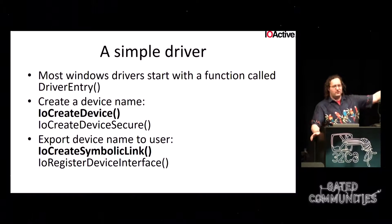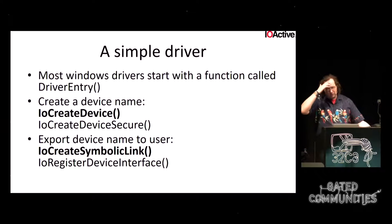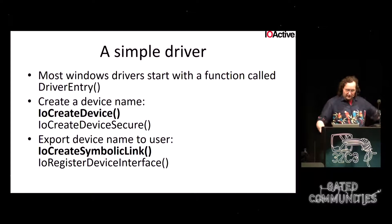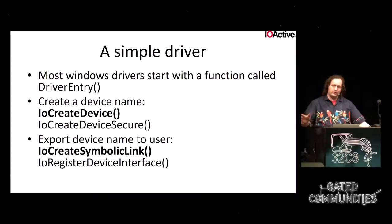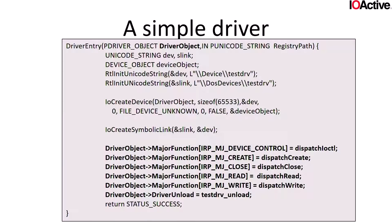The IO manager takes your request from user land and packages it in an IO Request Packet — an IRP — then finds your driver's dispatch routine and hands it off. A simple driver has a DriverEntry main entry point. Any driver that wants user-land interaction calls IoCreateDevice, then IoCreateSymbolicLink to let user land talk to the device. You then register dispatch callbacks to the IO manager for IoControl, FsControl, open, read, write, and so forth.